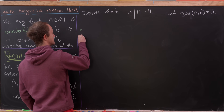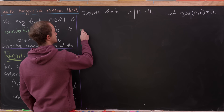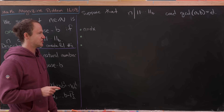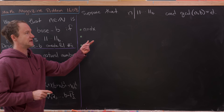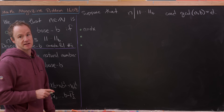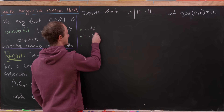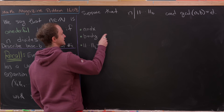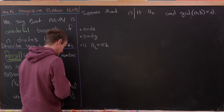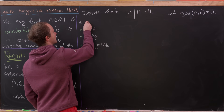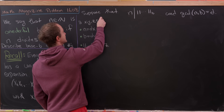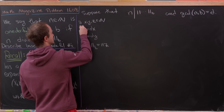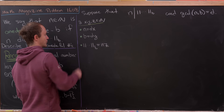That setup gives us three facts. We have n equals d times x for some natural number x, since d is the greatest common divisor of n and b and thus a divisor of n. We also know b equals d times y, and the string of ones in base b — being a multiple of n — can be written as n times z. There exist natural numbers x, y, and z such that these three equations hold.